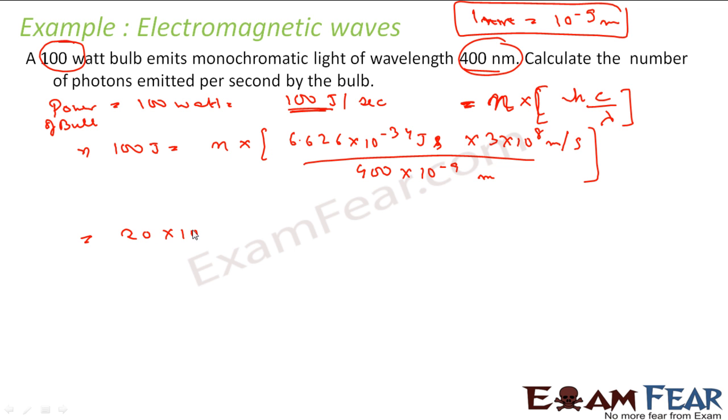So if you solve this now to get the value of n, you will find n as 2.0 × 10^19 photons. And since we are doing for per second, these are the photons emitted per second. These are my photons emitted. Hope you understand what we have done.